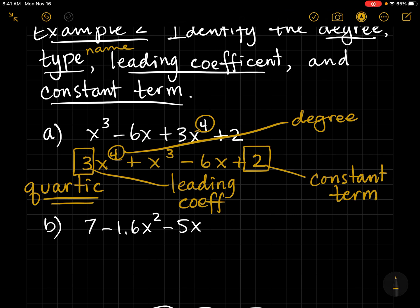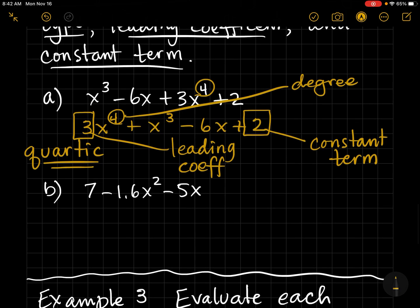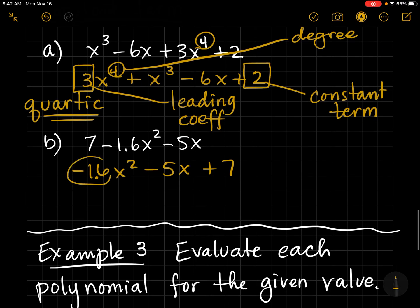Definitely pause and give part B a try on your own. Again, I'm going to put it in standard form, starting with the highest exponent first. And now I can see my leading coefficient. On the end, I can see my constant term. And sometimes you don't have a constant term, so you would just say that it's zero.